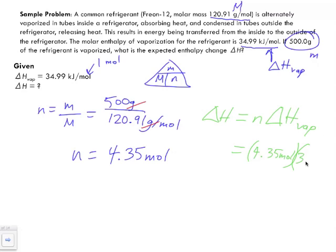Notice the units and what cancel out. Moles cancel out and all we're left with is kilojoules. So when we divide those together, we get a delta H that is equal to 144.7 kilojoules.